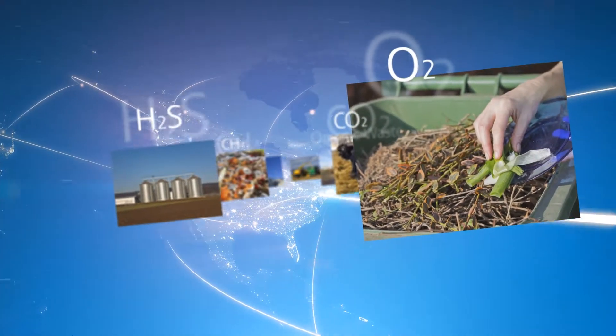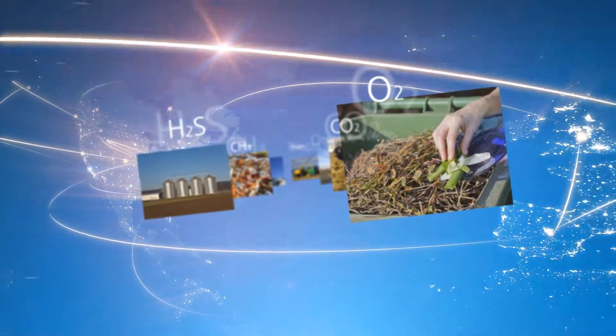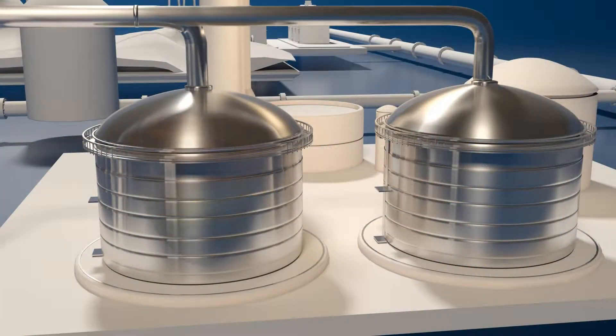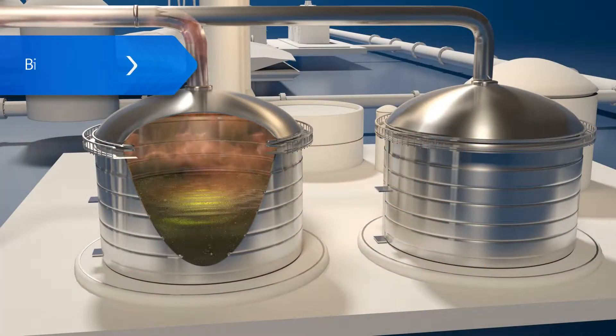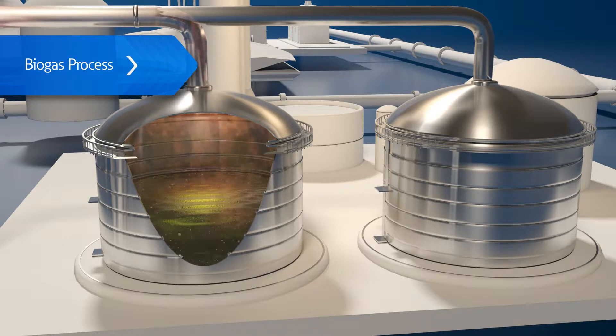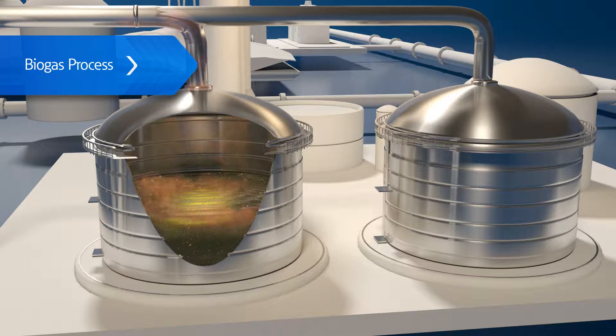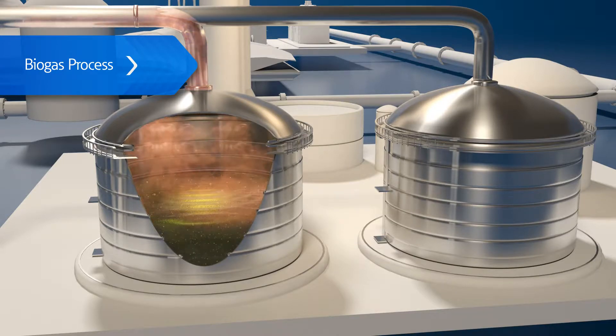Biogas has become an important source of renewable energy worldwide. Using a process known as anaerobic digestion or fermentation, biogas is produced from organic materials such as manure, sewage, municipal and green waste, plants and crops.